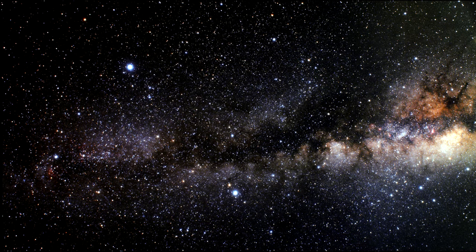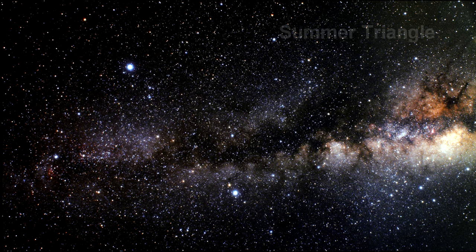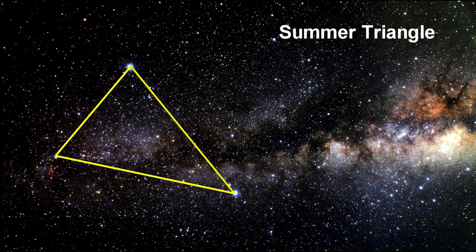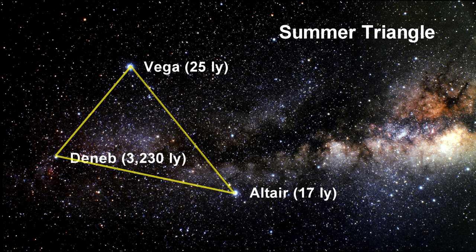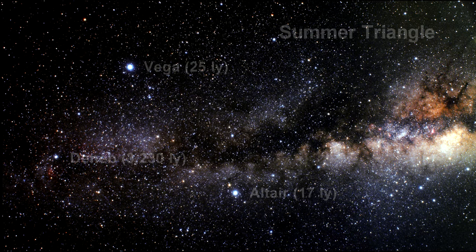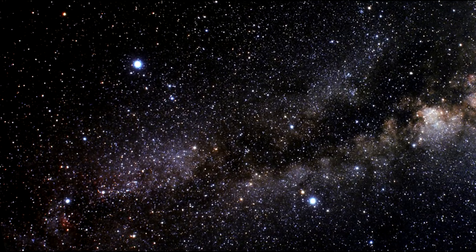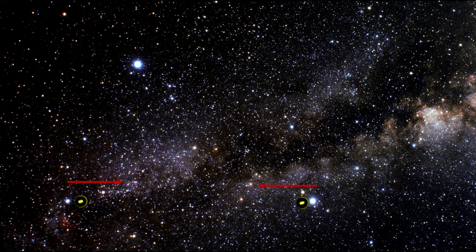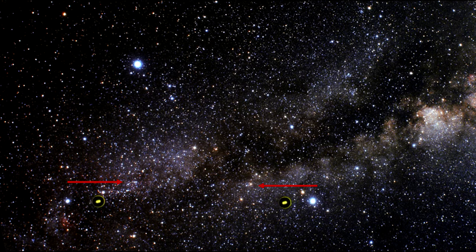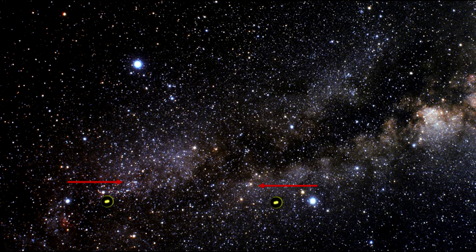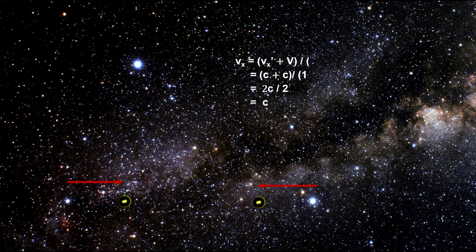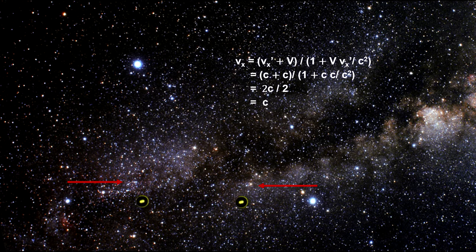In the most extreme case, suppose we had two photons traveling towards each other. Here is the Northern Hemisphere's Summer Triangle with Vega, Altair, and Deneb. Let's say one photon is traveling from Deneb to Altair, and the other one is traveling from Altair to Deneb. Of course, each of them is traveling at the speed of light, so we would see their closing speed at two times the speed of light. But if we look at it from the point of view of one of the photons, we see that it sees them closing at the speed of light, not twice the speed of light.